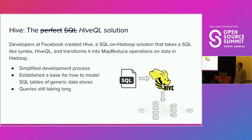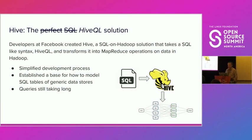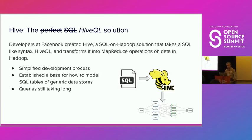Before we dive deeper into the history of Trino, it's worth mentioning its direct predecessor. Hive was the first attempt to provide a SQL-compatible interface for large-scale data processing. It was built on top of Hadoop, an open-source implementation of MapReduce. The introduction of Hive greatly simplified the development process, so it was no longer needed to write, compile, and deploy Java code every time you needed to do some analytics. Instead, users wrote a simple SQL-compatible query.